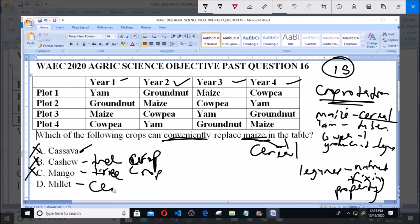Now, option D, which is millet, is a cereal. And since it's a cereal, it can be used to replace maize conveniently on the table. So, option D, millet, is the correct answer to the question.